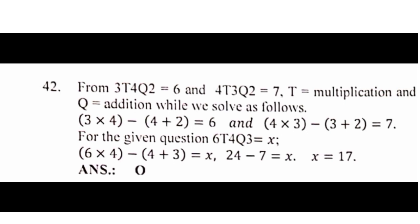Then, this one says 42. 3tq, 4q2 is equal to 6, and 4t3q2 is equal to 7. Now, t is equal to multiplication, while q is equal to addition. We'll resolve that 3 times 4 minus 4 plus 2 is equal to 6. Then, 4 times 3 minus 3 times 2 is equal to 7.